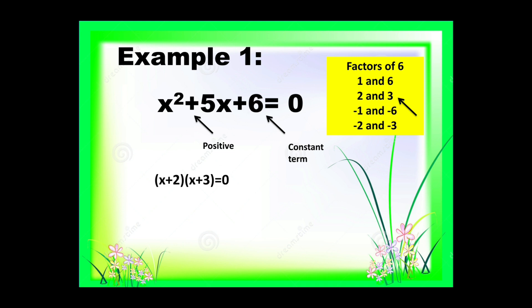So we will be having the quantity of x plus 2 times the quantity of x plus 3 is equal to 0. We need to equate the two factors to 0, so we will be having x plus 2 is equal to 0, and x plus 3 is equal to 0. Transposing positive 2 and positive 3 to the other side, we get x is equal to negative 2 and negative 3. The roots of x squared plus 5x plus 6 equals 0 are negative 2 and negative 3.